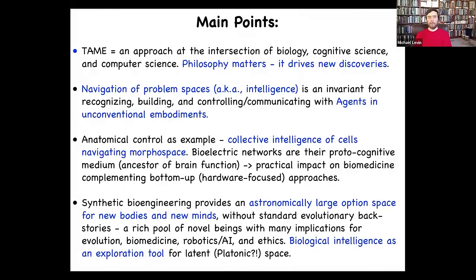What I'm going to try to transmit is a few main points. First, our approach at the intersection of several disciplines that drives specific new discovery — a way of thinking about agency, about memory, and things like that in a way that actually drives new capabilities. I'm going to talk about this notion of navigating arbitrary problem spaces and the idea of that being an invariant that helps us recognize, build, and communicate with unconventional agents in different embodiments. The primary example will be the collective intelligence of cells navigating anatomical morphospace. I'll talk about how electrical networks are a kind of protocognitive medium, which allows this collective to have problem-solving capacities in the anatomical space — with applications in biomedicine and bioengineering. And at the end, I'll talk about some synthetic living beings we created to begin to understand where novel goals for these agents can come from.